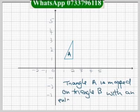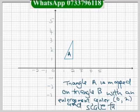And the question: triangle A is mapped on triangle B with an enlargement, center (0,2) and scale factor 3.